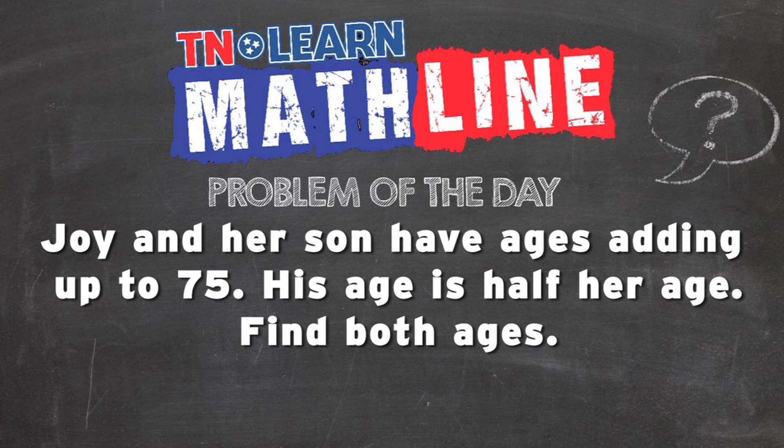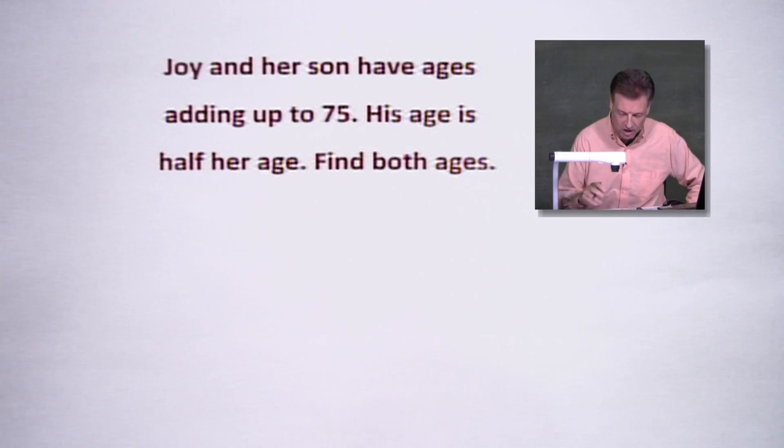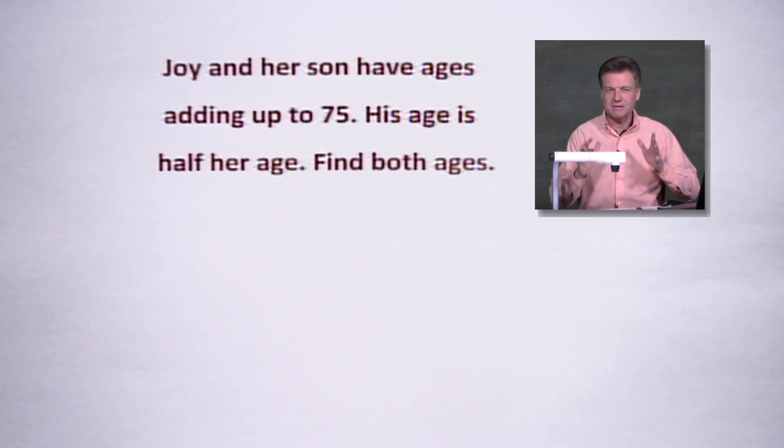All right, so Joy and her son have ages adding up to 75. His age is half her age. We're going to find both ages. Let's see how this one works. First of all, let's play with this a little bit.